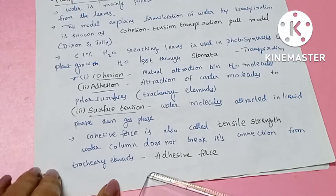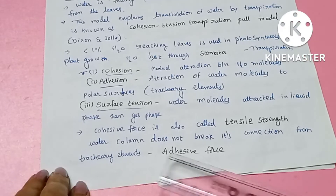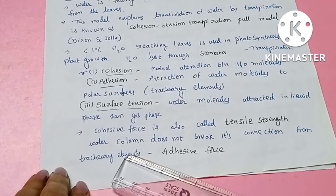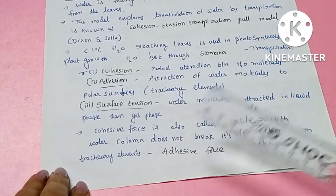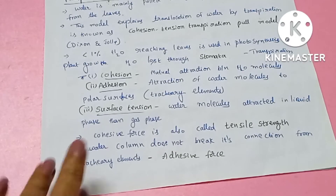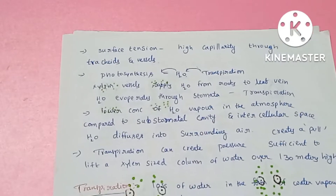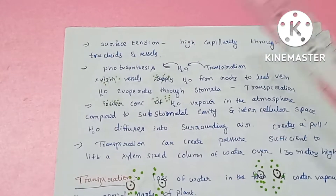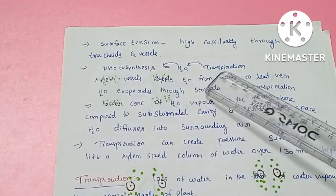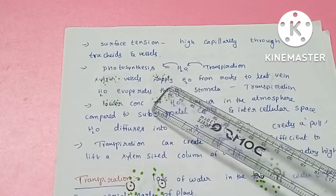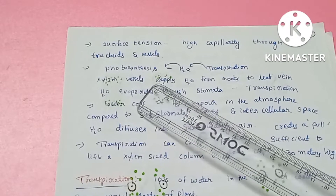The cohesive force is called tensile strength. The water column is held because of adhesive force attracted to the tracheary elements, so the water column does not break because of adhesive force.